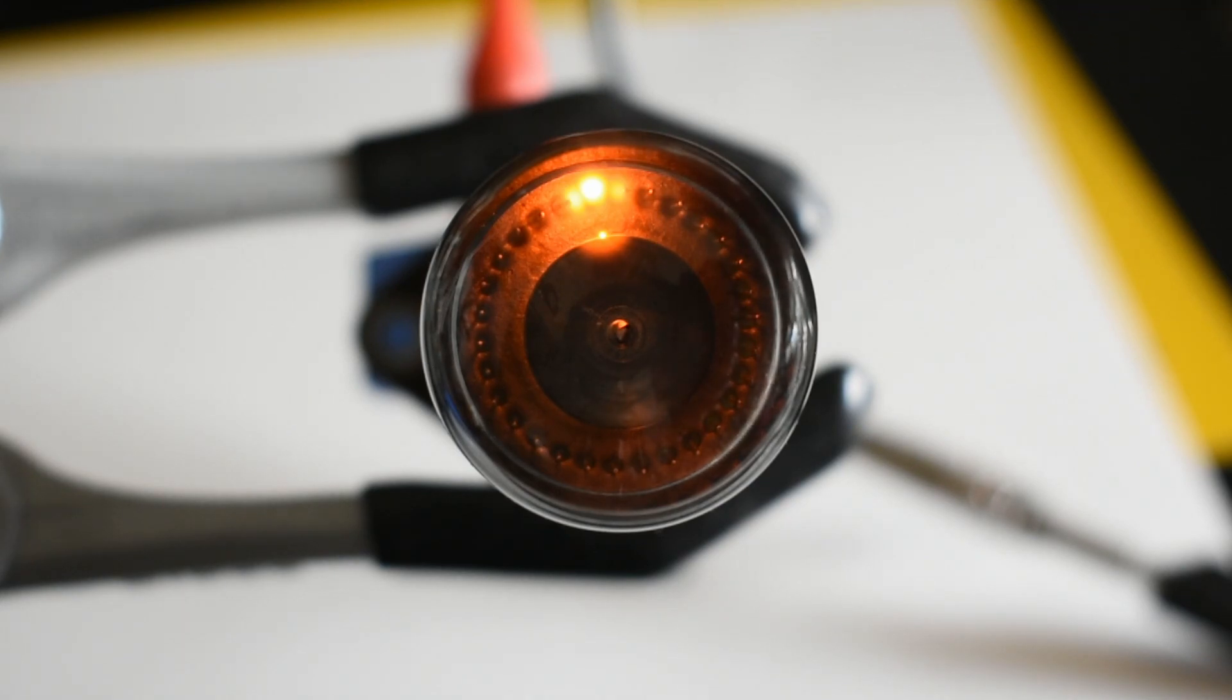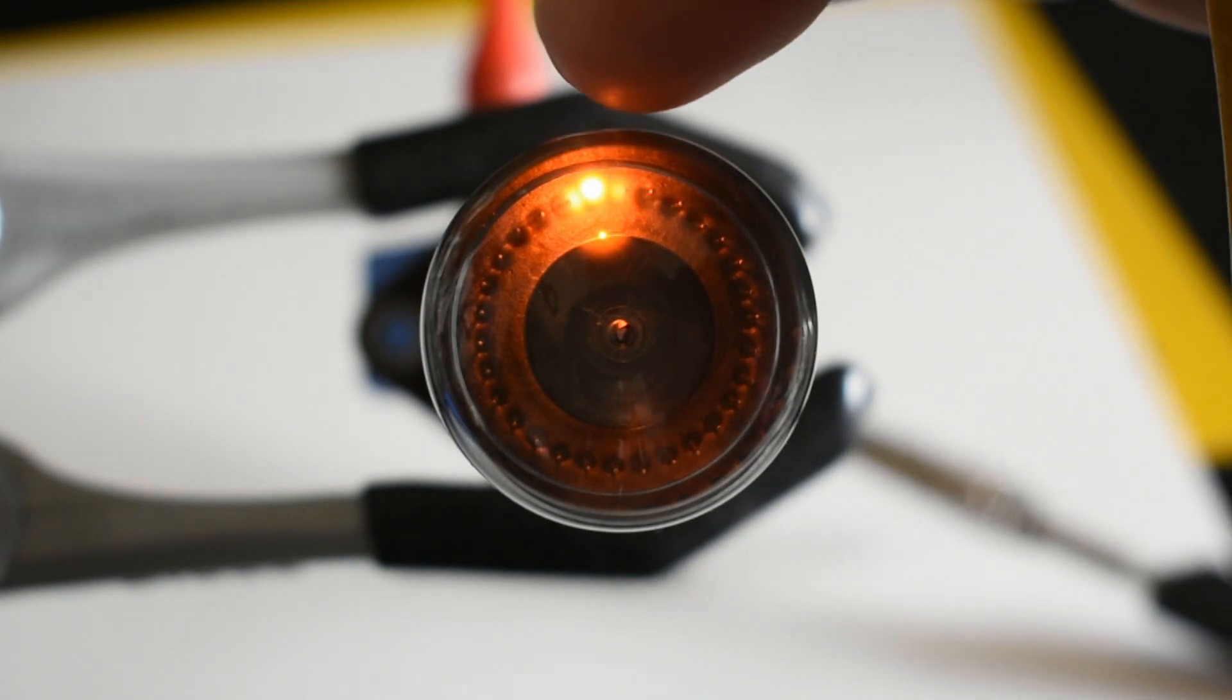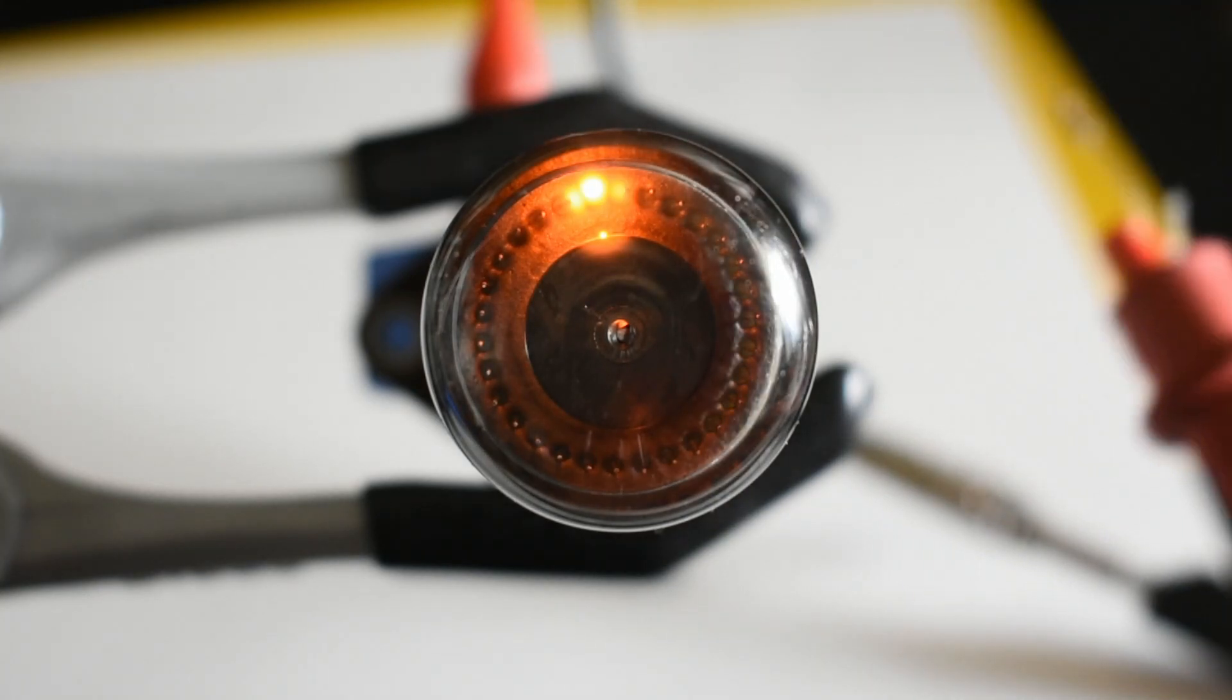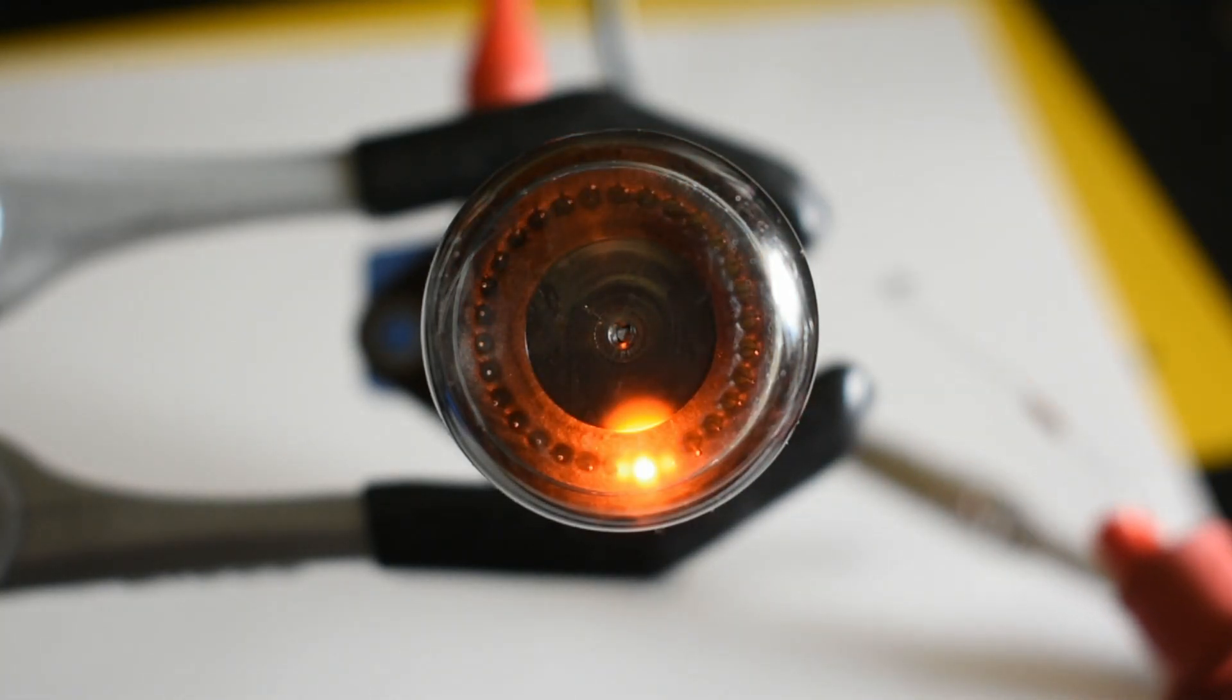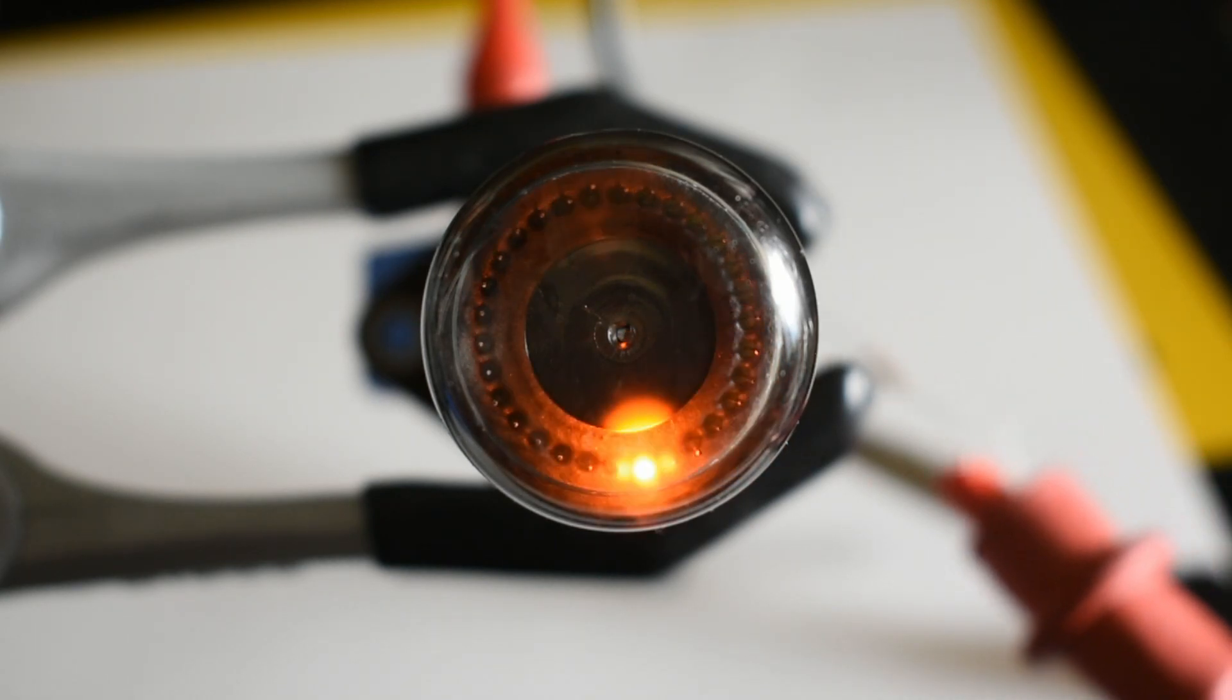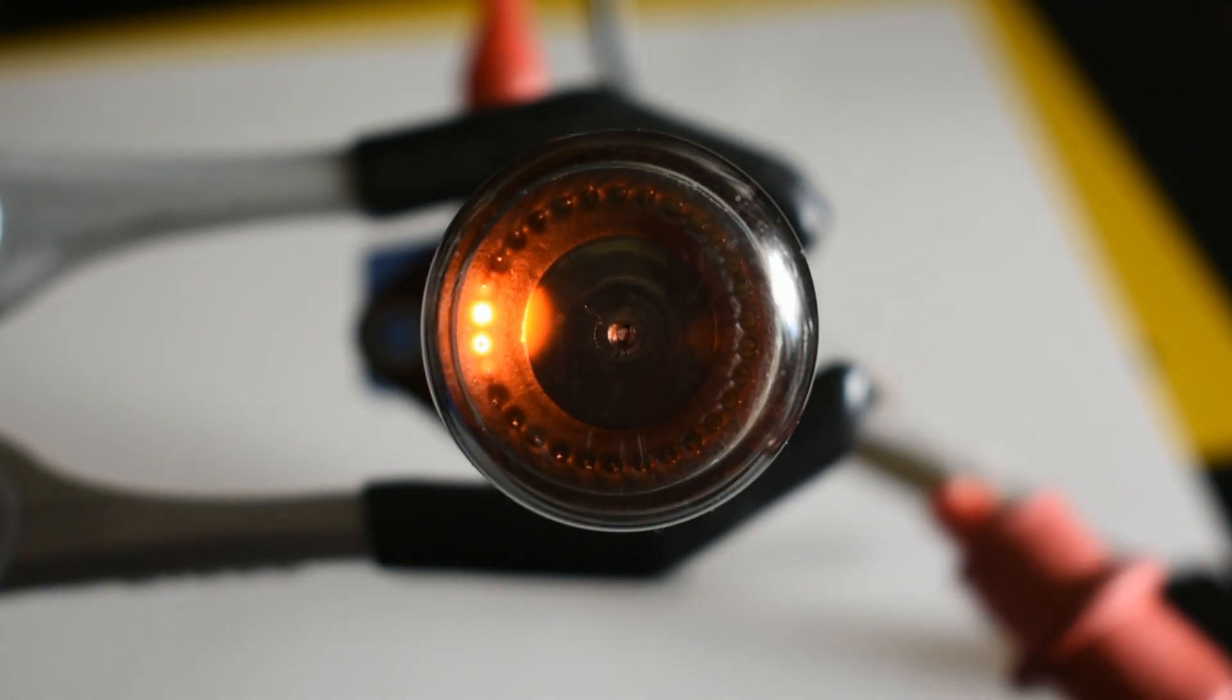You can just see the center pin here glowing and a faint glow discharge around the other two pins. Connecting the supply to either side of these pins can clock it one way or the other. It's a really clever little device.